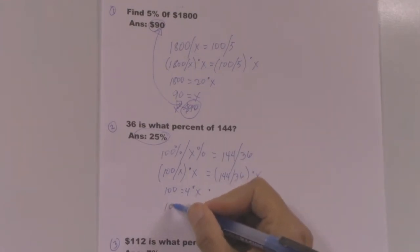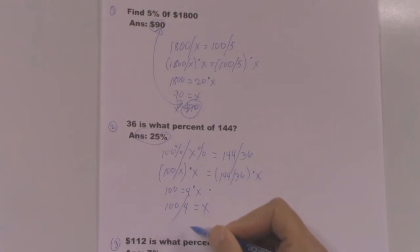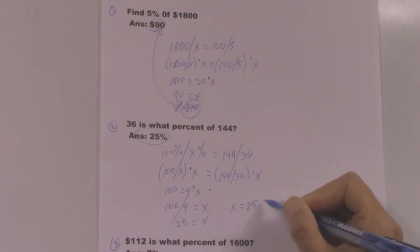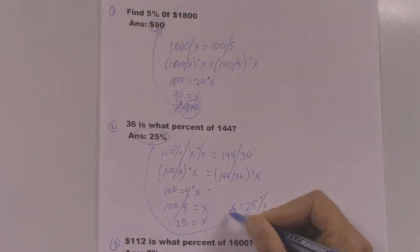Then we divide both sides of the equation by 4 to get the value of x. So 100 divided by 4 equals x, so the answer is 25 equals x. X equals 25%. So that is how you get the answer 25%.